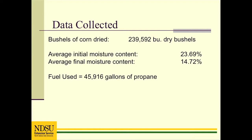I will go through the steps of calculating the energy efficiency to demonstrate the calculations. Shown are the data needed to calculate the energy consumption for a drying season. Using an entire drying season reduces the potential for measurement errors. The bushels of corn dried was measured as grain was delivered to market after drying, so is labeled as dry bushels. The initial moisture content was measured as corn was loaded into the wet holding bin or dryer from the field. The final moisture content was calculated from moisture contents measured as corn was delivered to market. The fuel use was determined from the fuel delivery slips.